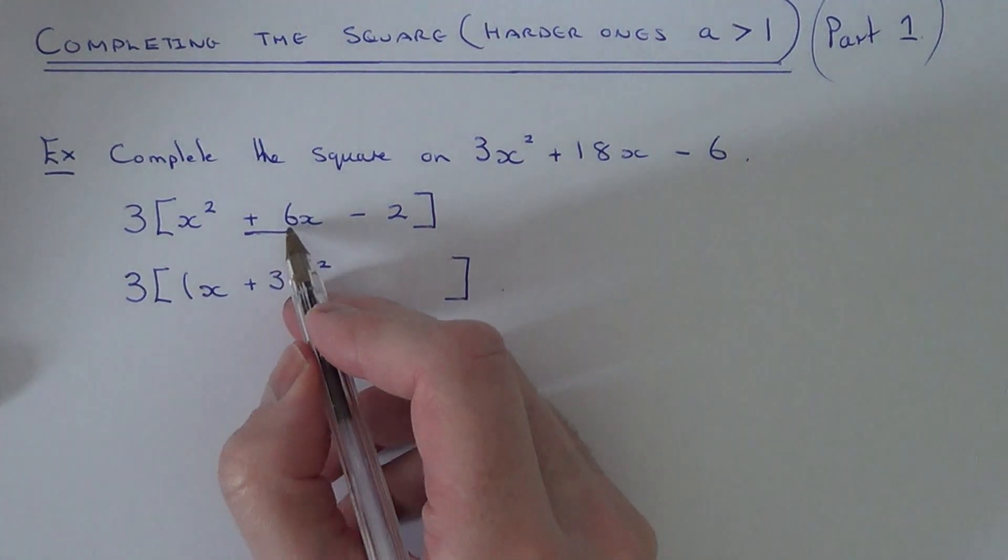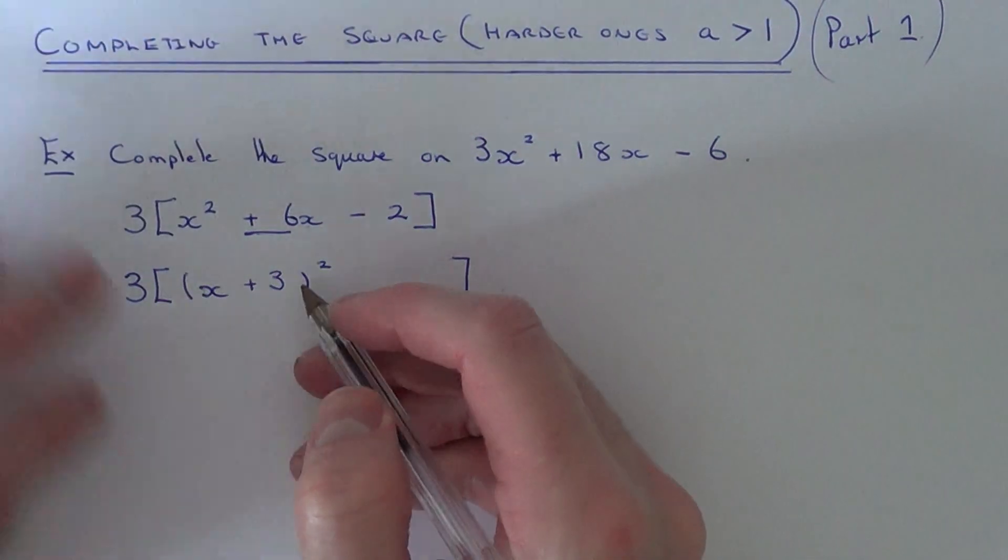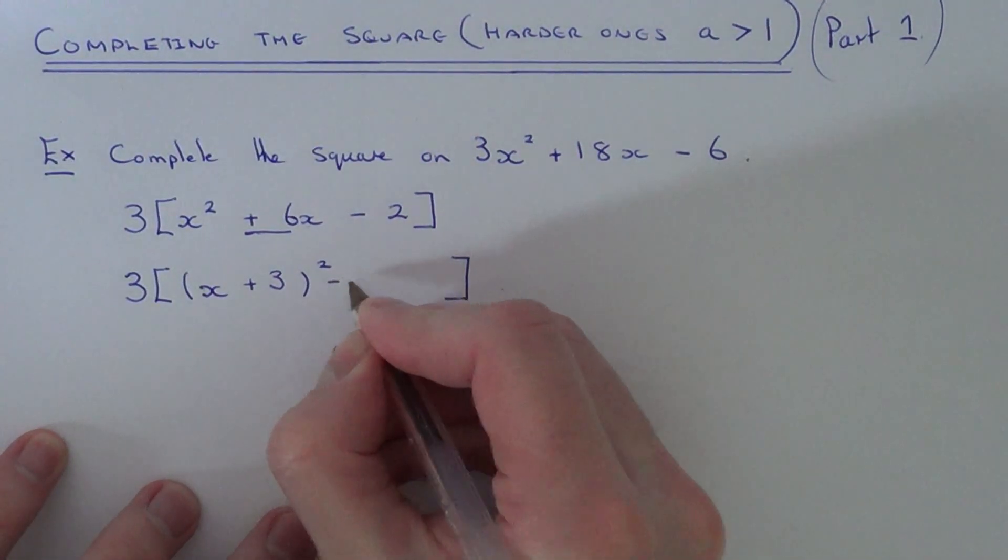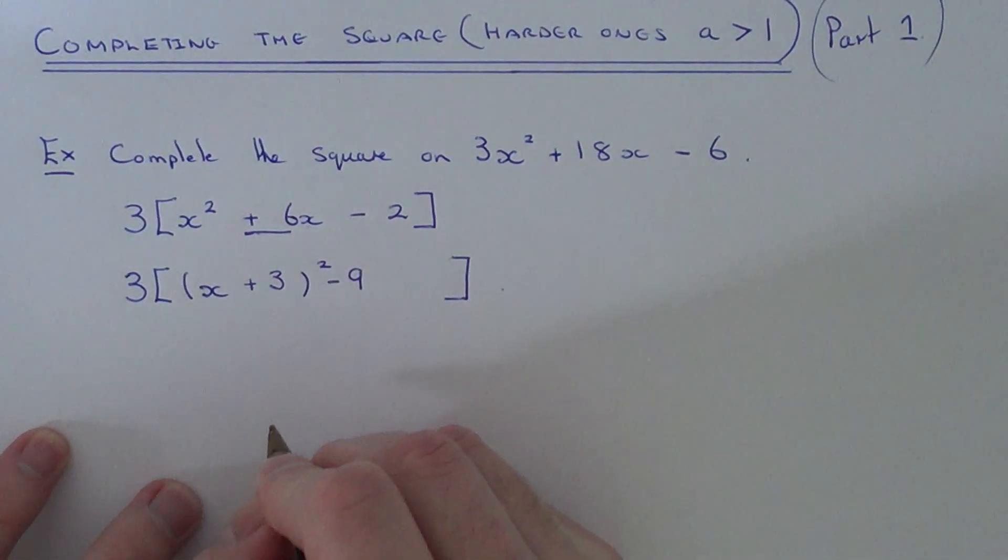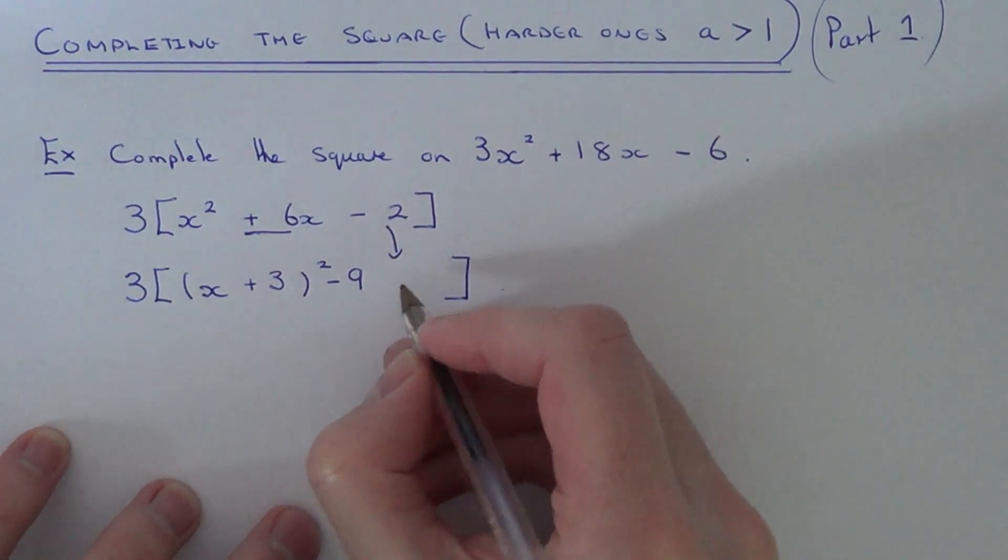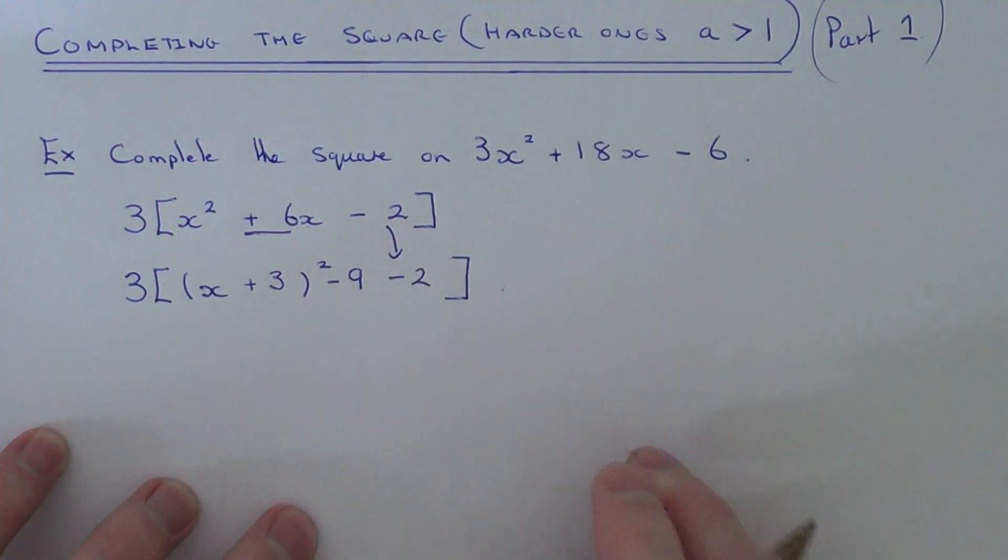You then square this number that we've just halved. So 3 squared is 9 and we subtract that off the end. And then we copy down the minus 2 to the next line.